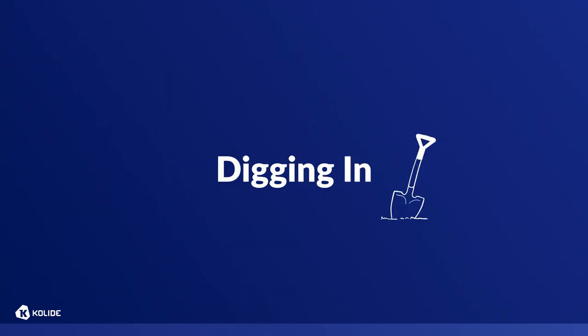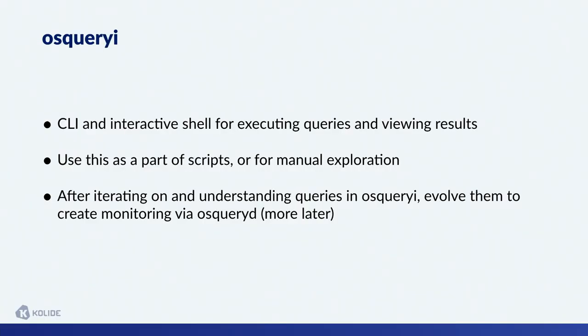So let's dig into using it. We'll start with OSQuery I, which is the interactive shell — just like a SQLite shell that allows us to write queries and see the results. This is really useful for exploring what sort of data is available, and we can also use it as part of scripting. Often what we'll do is use OSQuery I to understand what data is available and then evolve that into monitoring through OSQuery D, which is the daemon.